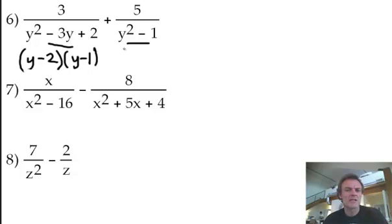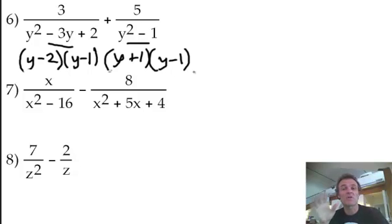Now, the second denomination broken down is the difference of squares, so recognise that, it's the difference of squares. Again, y plus 1, y minus 1. And again, they've done one where they're repeating a y minus 1, but remember, don't write it twice. Common denominator.